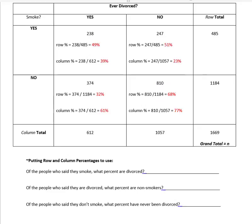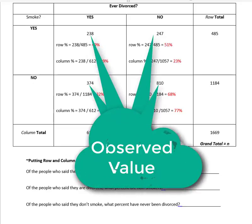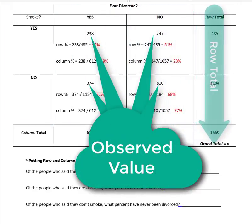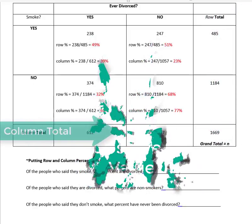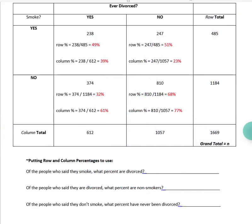The row percent is the observed value divided by the total for the row, and the column percent is the observed value divided by the total for the column. Putting those row and column percentages to use, you can answer questions like: of the people who said they smoke, what percent are divorced?